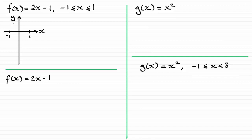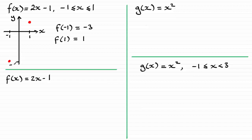If I work out f(−1) first: 2 times −1 is −2, minus another 1, that gives −3. And if we take the endpoint when x = 1, then f(1) = 2 times 1, which is 2, minus 1, giving 1. Marking those points on the graph: when x = −1, we get −3, and when x = 1, we get 1. It's not drawn perfectly accurately but joining those two points gives us a straight line.